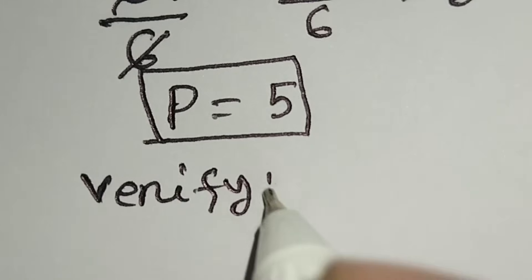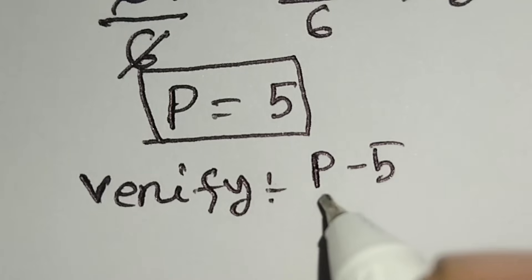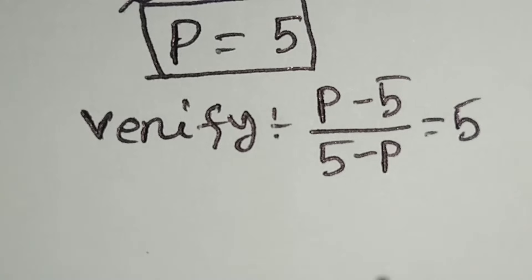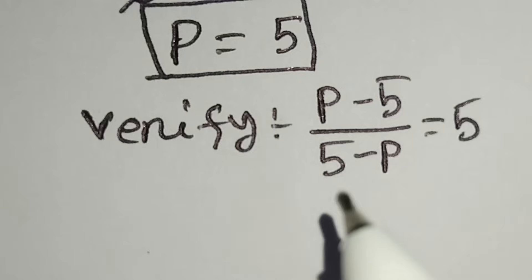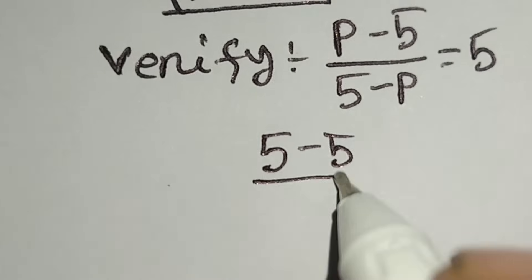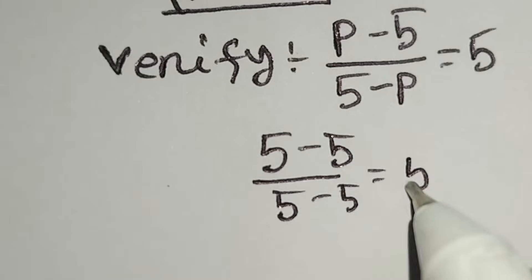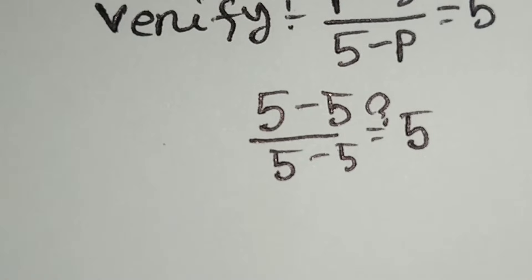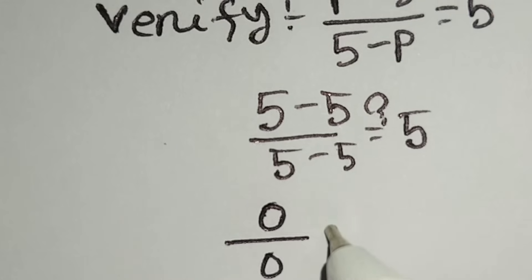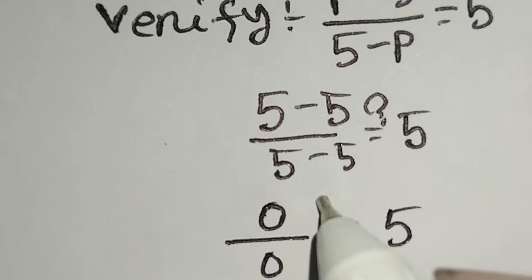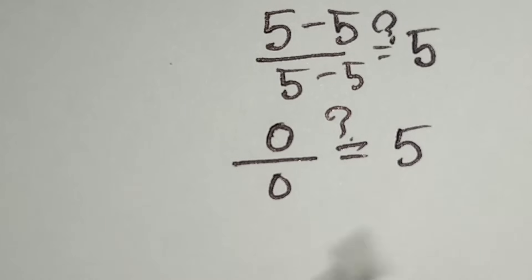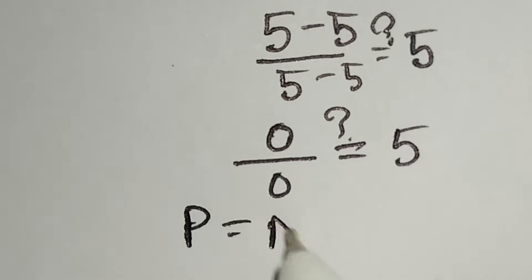Let's verify. The main equation is p minus 5 over 5 minus p is equal to 5. Now we'll substitute the value p equals 5. We get 5 minus 5 over 5 minus 5, which is equal to 0 over 0. But 0 over 0 is undefined, so there is no real solution. Therefore p has no solution.